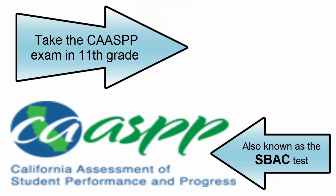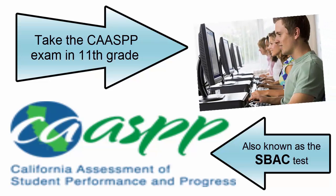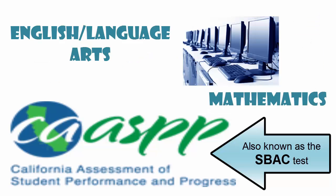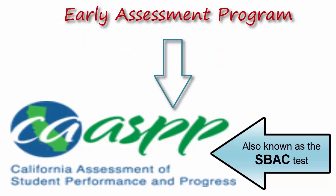So what does it look like? In the spring of the 11th grade year, students will take the California Assessment of Student Performance and Progress, or the CAASPP, in English Language Arts and Mathematics. This is the new standard computer-based exam that replaced the old CST state testing. The EAP exam is embedded within this new test.